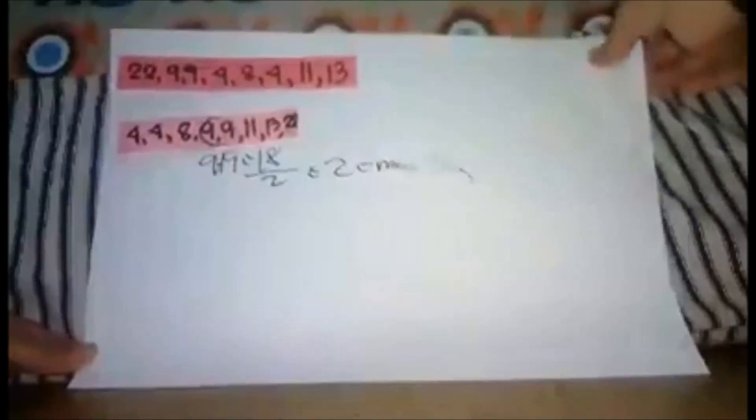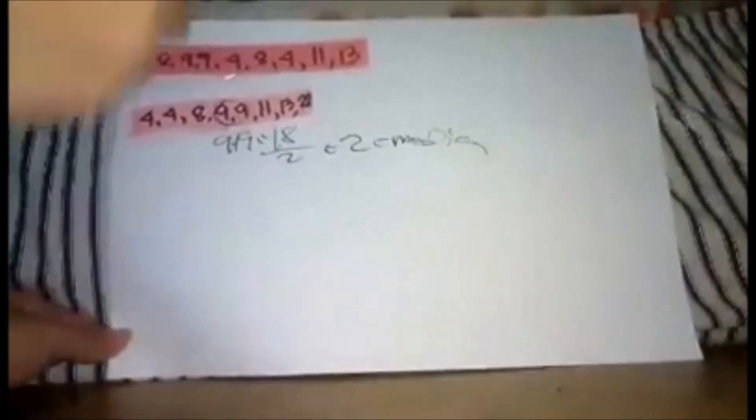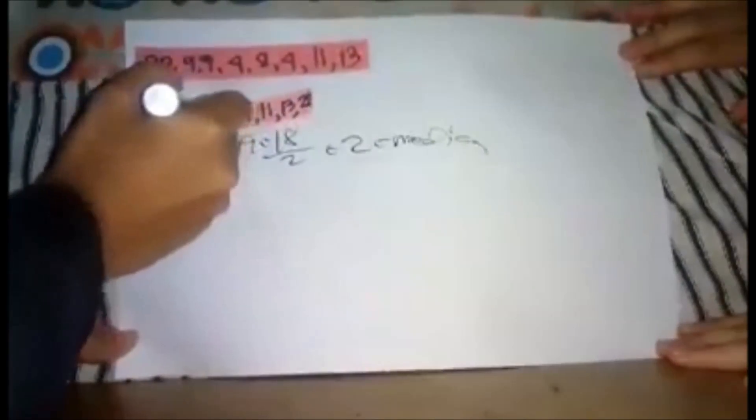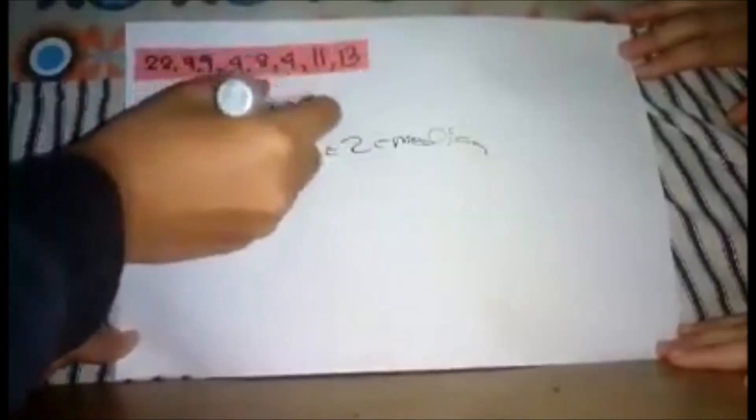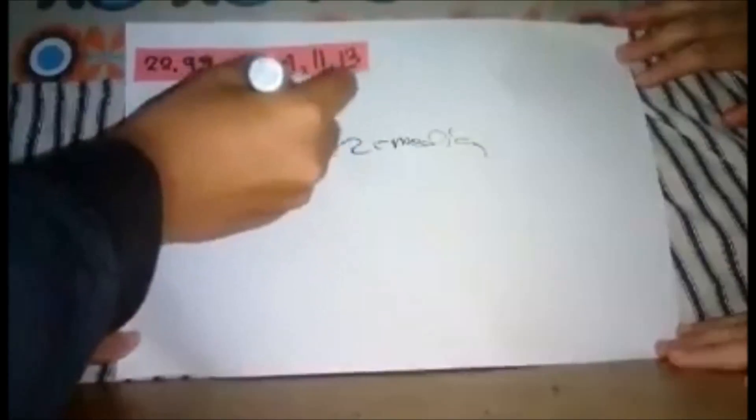In finding Q1, counting: 1, 2, 1, 2. Our Q1 is 4. And our Q3, counting: 1, 2, 1, 2, is 13. So that's it.